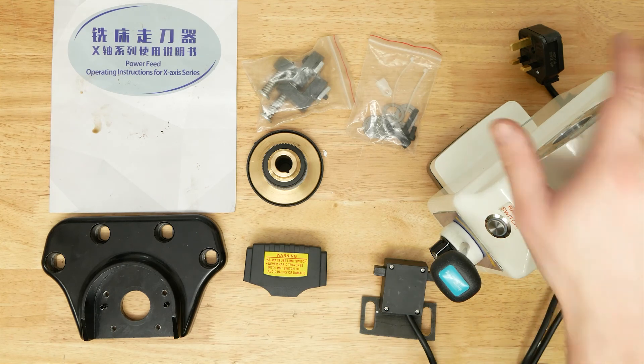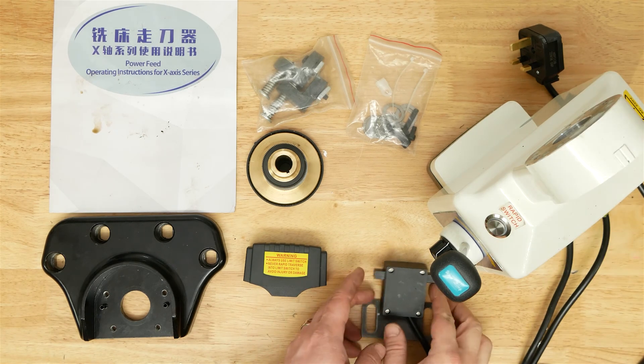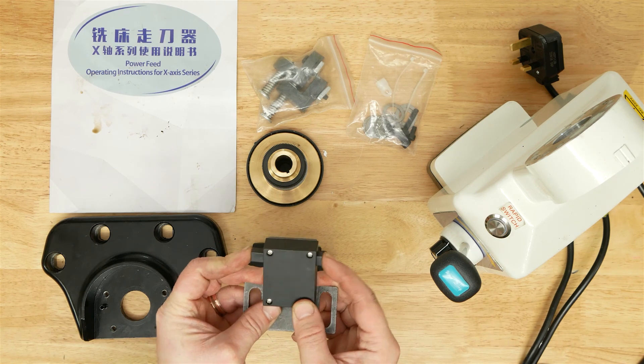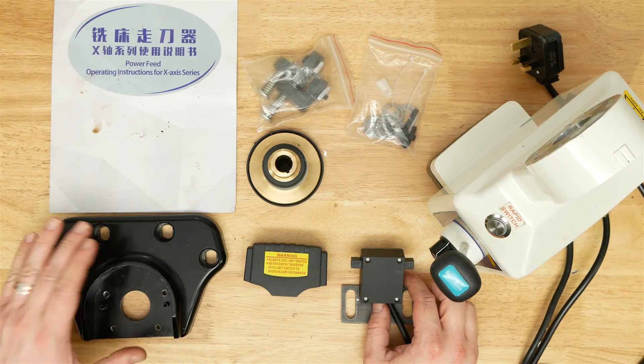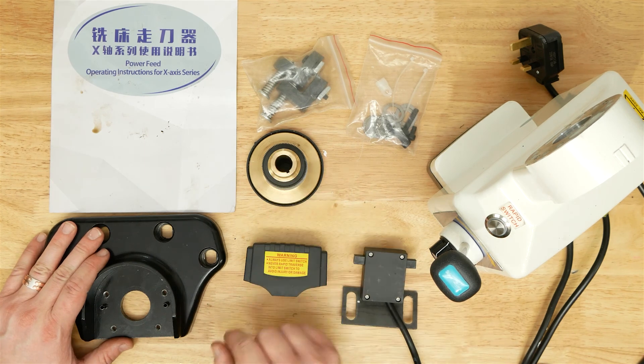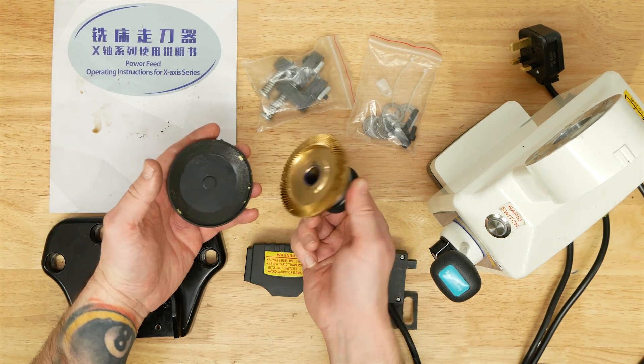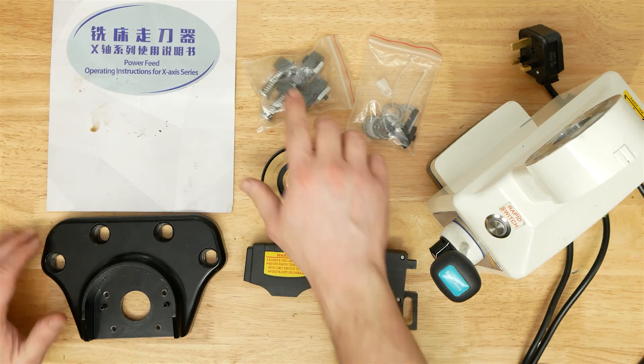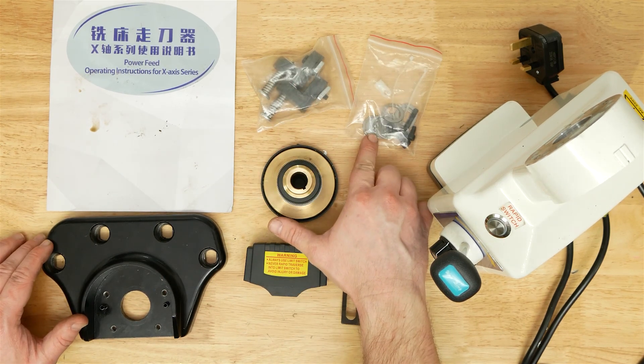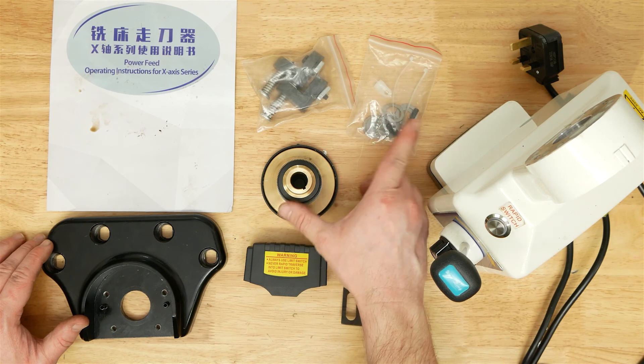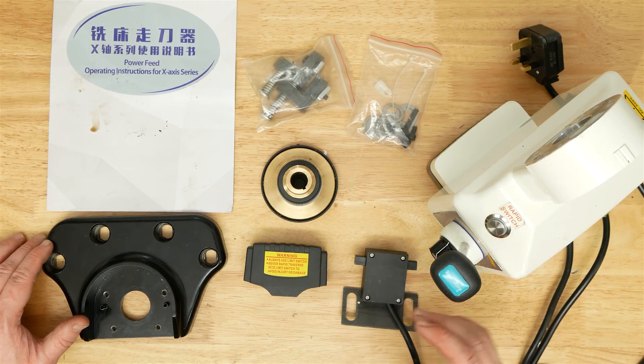And this is what comes in the box. The unit itself, obviously, the limit switch which is attached to the power feed, a bracket for your limit switch, mounting plate, bevel gear. Limit stops, and a bag with some shims, bolts, a P-clip, cable ties in there, keeping your cables tidy.